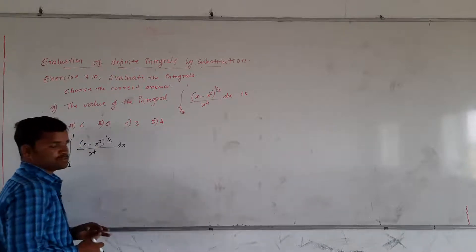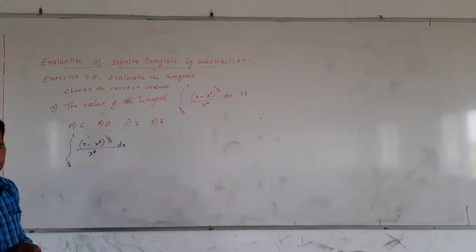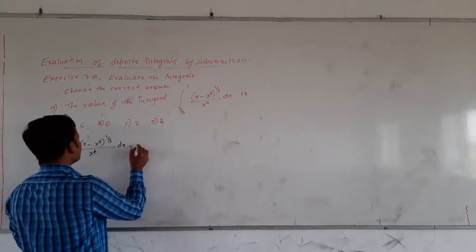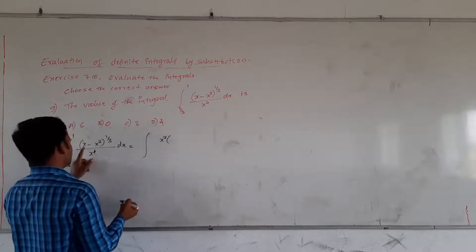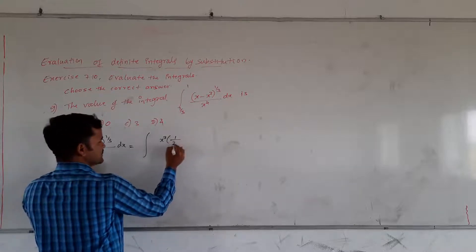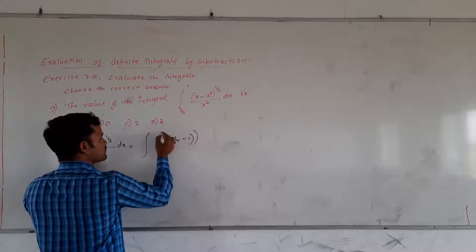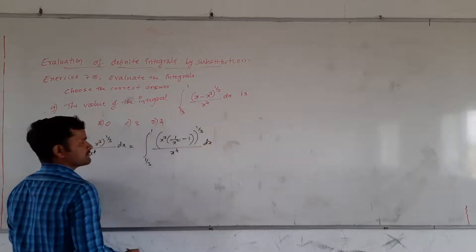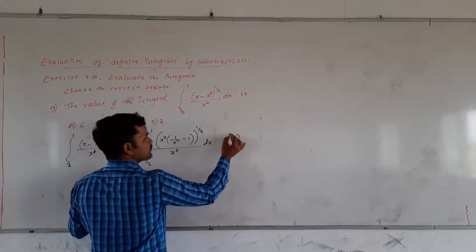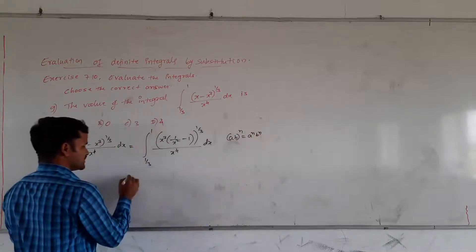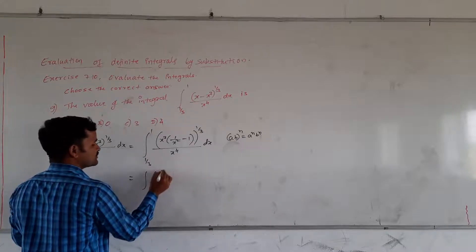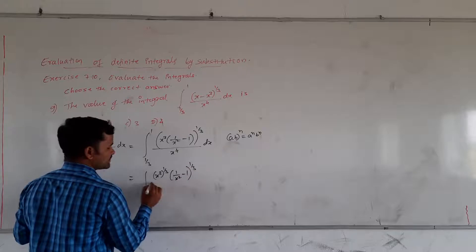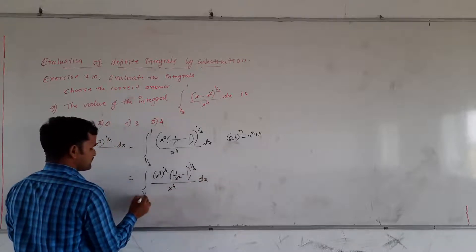The problem is integration of (x minus x³) to the power 1/3, whole divided by x raised to 4, integrating from 1/3 to 1. Here, 1/3 in the power means it is cube root. From these two terms, I will try to take x³ common. This becomes integration of x³ — taking x³ common means 1/x² will be there — minus 1, whole to the power 1/3, divided by x raised to 4, from 1/3 to 1 into dx.